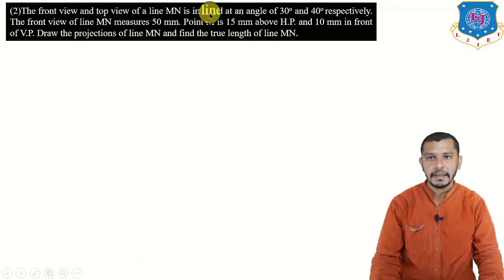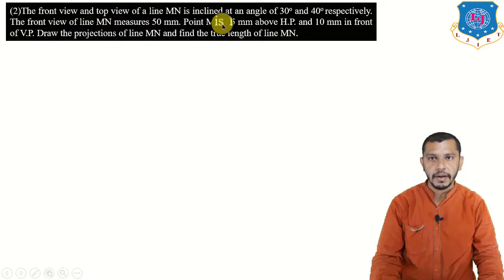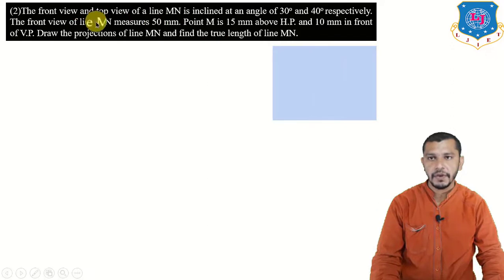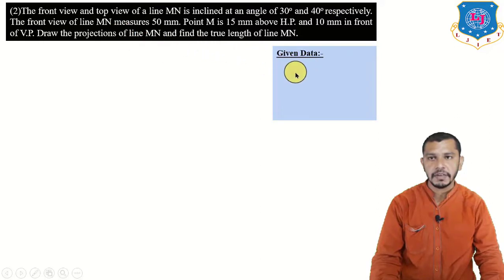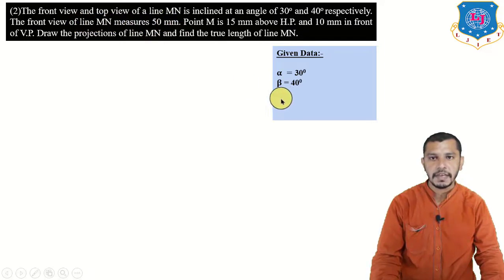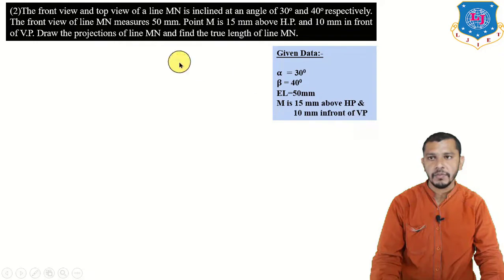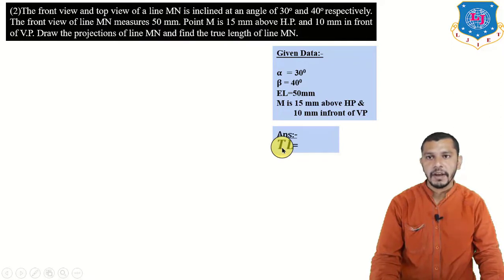Next example: the front view and top view of line MN are inclined at 30 degrees and 40 degrees respectively. The front view of line MN measures 50 mm. Point M is 15 mm above HP and 10 mm in front of VP. Draw the projection of line MN and find the true length of the line. Given data: alpha is 30 degrees, beta is 40 degrees, elevation length is 50 mm, M is 15 mm above HP and 10 mm in front of VP.